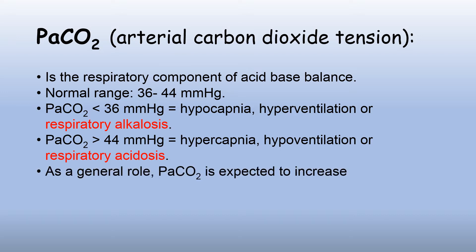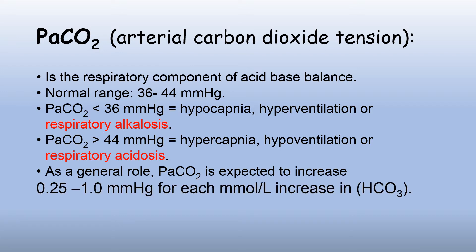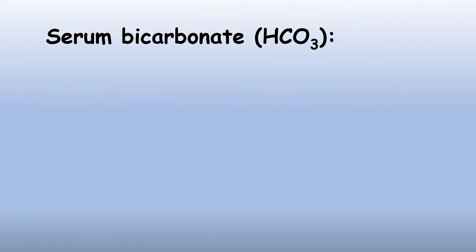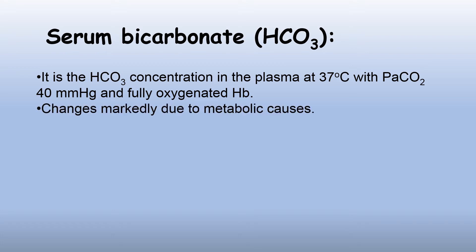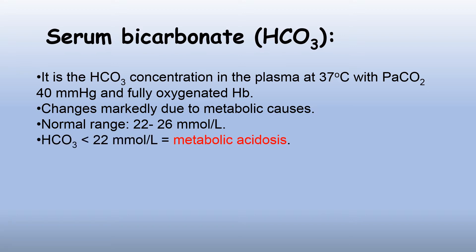As a general rule, PaCO2 is expected to increase about 0.25 to 1 mmHg for each millimole per liter increase in the bicarbonate. Serum bicarbonate is the bicarbonate concentration in the plasma at 37 degrees Celsius, with PaCO2 40 mmHg and fully oxygenated hemoglobin. It changes markedly due to metabolic causes. Normal range is between 22 to 26 mEq per liter. Bicarbonate less than 22 is metabolic acidosis, while bicarbonate more than 26 is metabolic alkalosis.